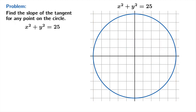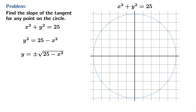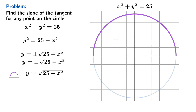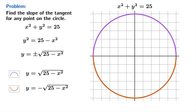The circle does not pass the vertical line test — it does not show y explicitly as a function of x. When you solve explicitly for y: y² = 25 − x², giving y = ±√(25 − x²). So we actually get two explicit functions: y = √(25 − x²) gives the upper half, and y = −√(25 − x²) gives the lower half.